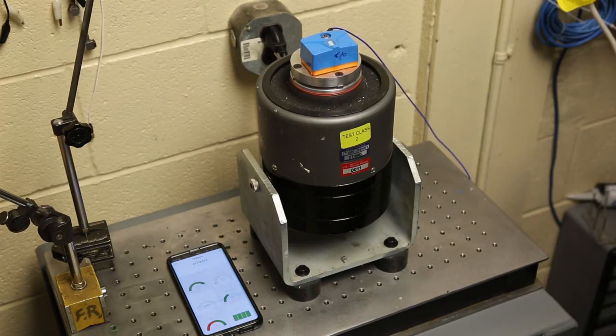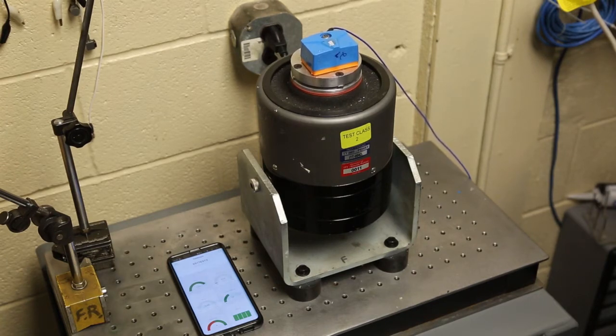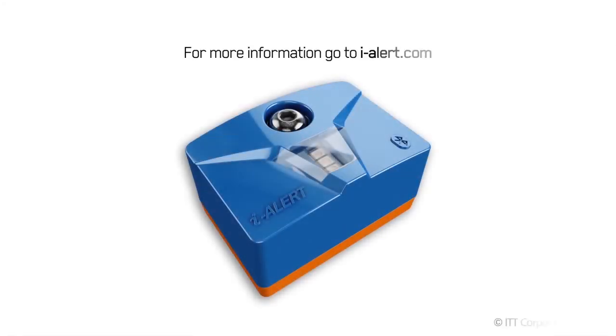If you need to track the temperature and vibration of your rotating equipment, even in the harshest environments around the world, put an iAlert sensor on it. It's up for the task.